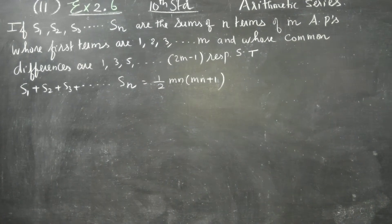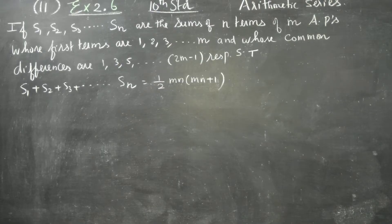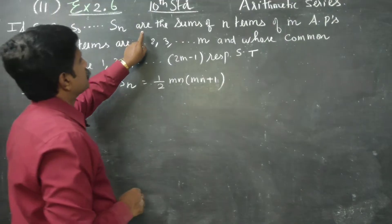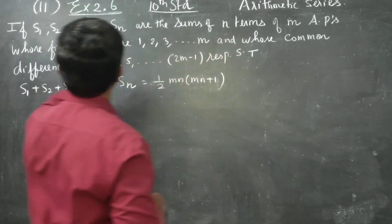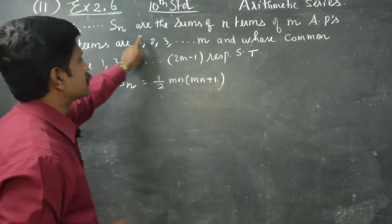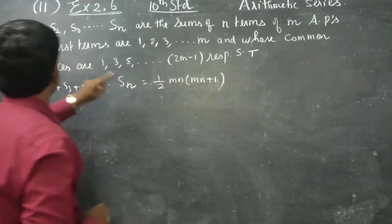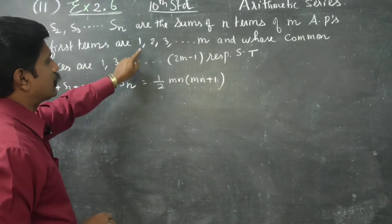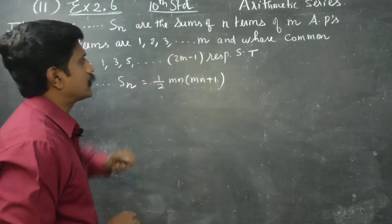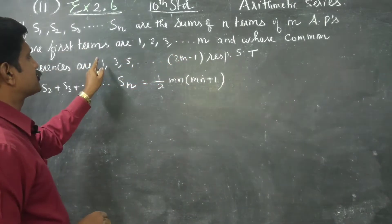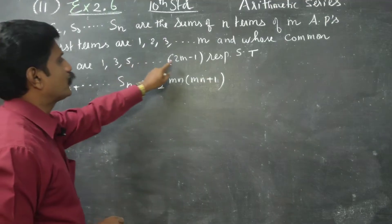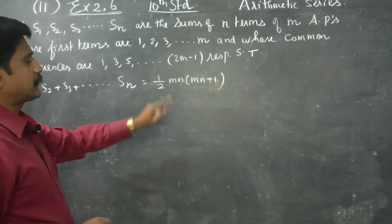Dear 10th standard students, in Exercise 2.6, sum number 11: S1, S2, S3, ..., SN are sums of n terms of APs whose first terms are 1, 2, 3, ..., M and whose common differences are 1, 3, 5, ..., 2M minus 1. Show that.